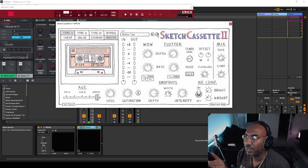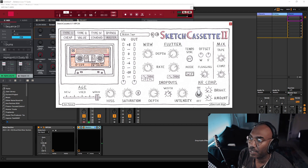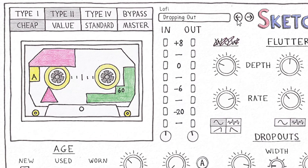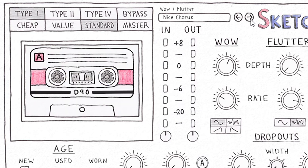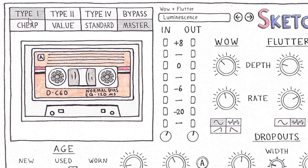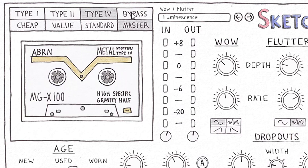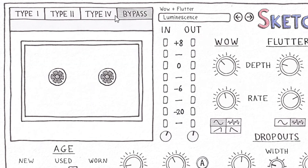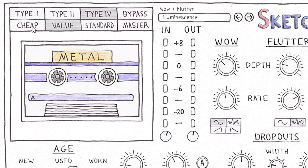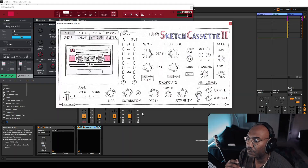My early impressions about Sketch Cassette 2 is the presets are banging. And if you notice, the tapes actually change too while you're going through many of the different types of tapes, and I can really dig it. I think it has to do with type 1, type 2, type 4 — let's go back to type 4 again. Standard. Yeah, so you can see the different tapes. We're going to play with some of the different features, going through type 1 to type 2 and beyond.